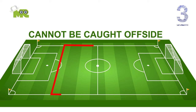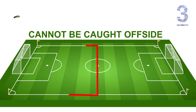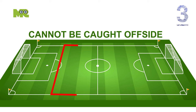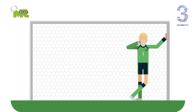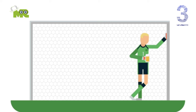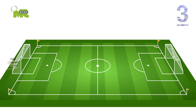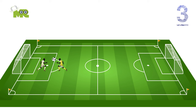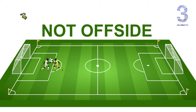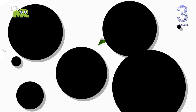A player cannot be caught offside in their own half. The goalkeeper does not count as a defender. If the ball is played backwards and the player is in front of the last defender, then he is deemed to be not offside.